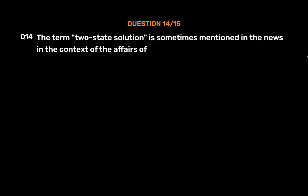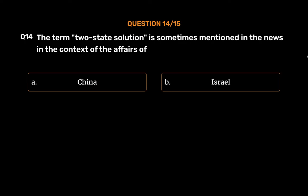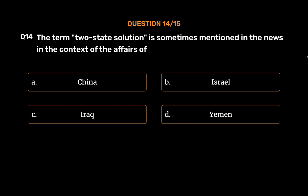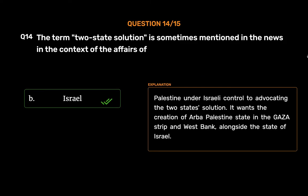Question No. 14. The term 'two-state solution' is sometimes mentioned in the news in the context of the affairs of: Option A: China. Option B: Israel. Option C: Iraq. Option D: Yemen. The correct answer is Option B: Israel. The two-state solution advocates the creation of an independent Palestine state in the Gaza Strip and West Bank, alongside the state of Israel.